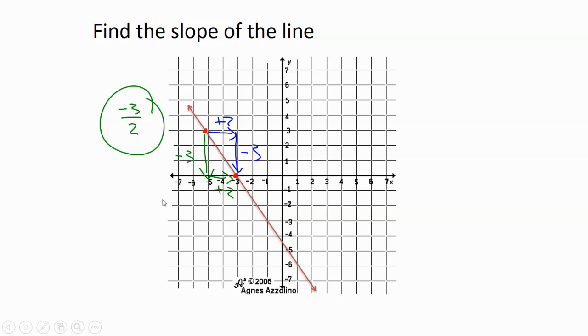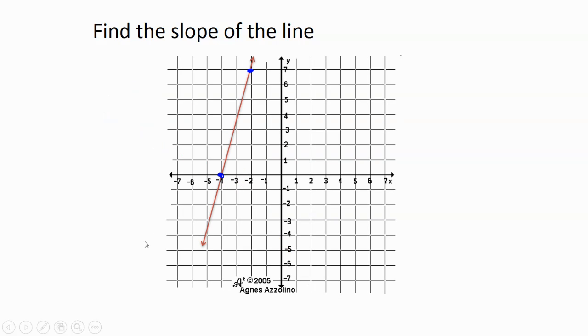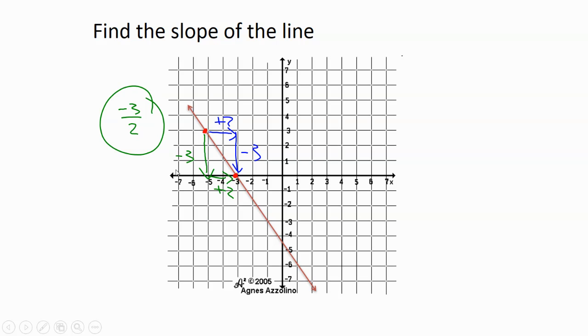I could also do it the other way. I always like to go up and down first, but let's say you start at this point and you decided to go right two, down three. That's not wrong, and you still should get the right answer. Because when I go to write this, it would be my up and down number, still negative three, my left and right number, still two. It's still negative three over two.